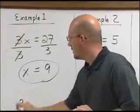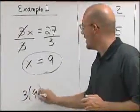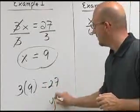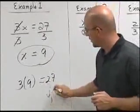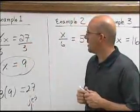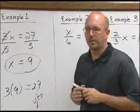We can check our answer. Does 3 times our 9, which we're replacing x with, equal 27? Yes. So really kind of an easy example there using undoing the multiplication.